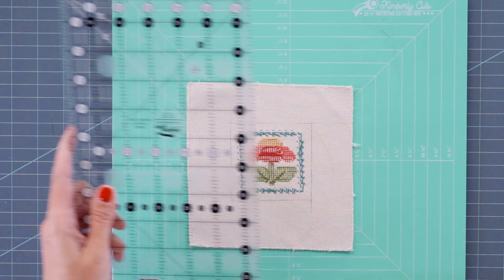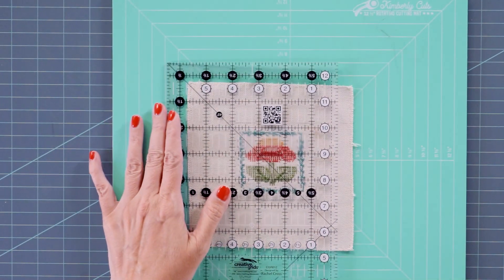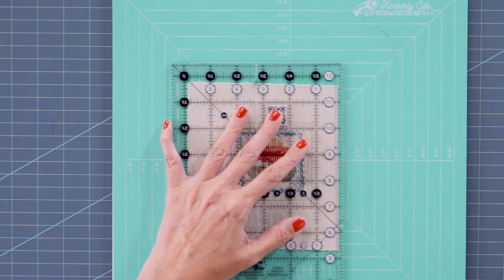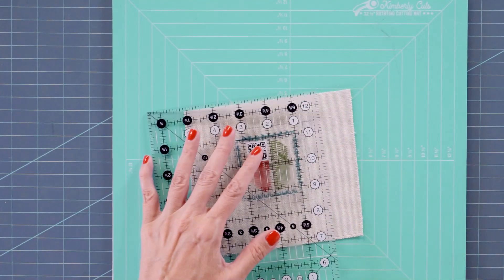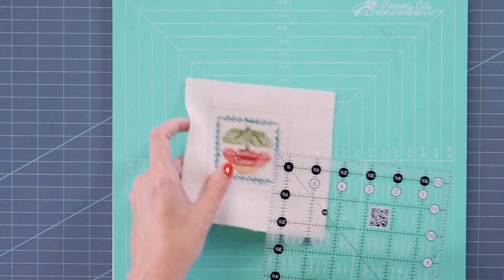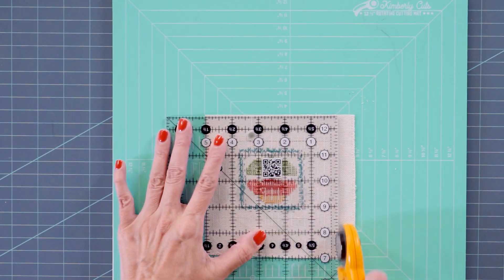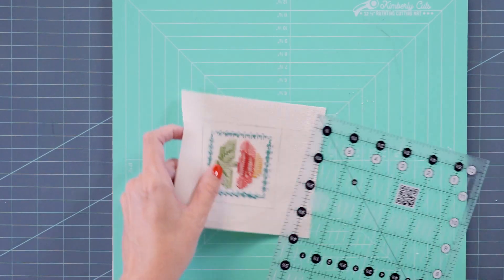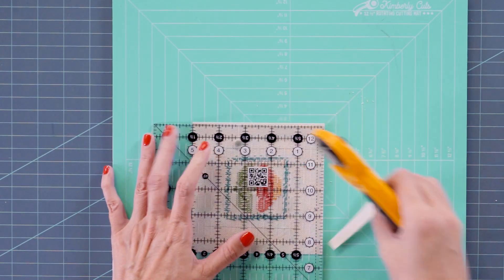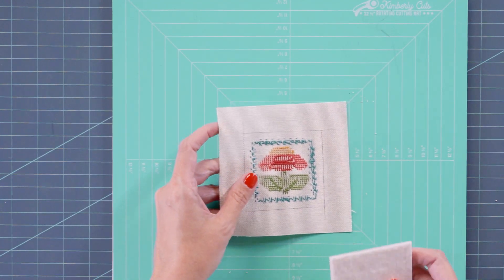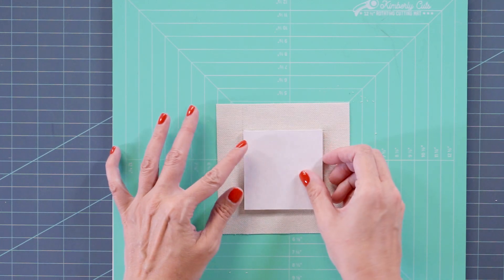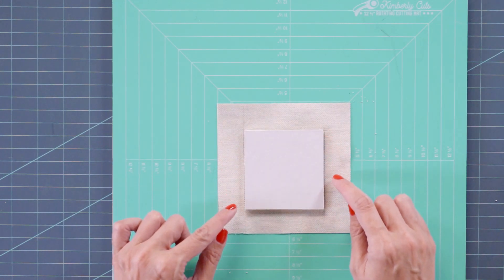Now I'm going to trim outside of the drawn line about one inch. You can leave as much or as little as you feel comfortable with. But I think one inch is plenty to pull on the back. And then I'm going to take the sticky board that has batting on it, place the batting right side down within the lines that we drew.